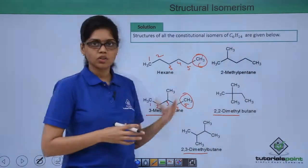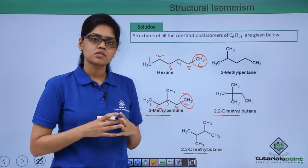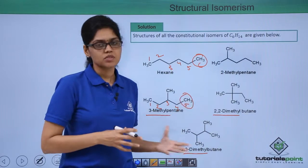So for the hexane molecule, the maximum number of constitutional isomers that you can get are just five, as we have shown here.